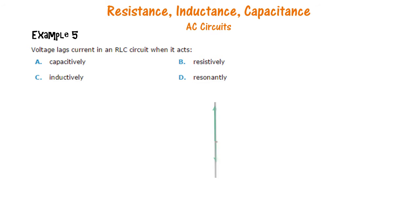So we draw the phasor diagram for a series RLC circuit and we know that this phase angle phi will lead or lag depending on VL minus VC.